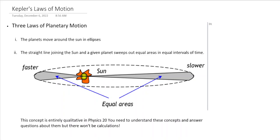Hello and welcome to my video on Kepler's three laws of planetary motion. So the first law is really easy, the planets move around the sun in ellipses, so not perfect circles.